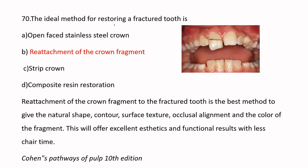The ideal method for restoring a fractured tooth is reattachment of the crown fragment. Stainless steel crowns in the anterior region are a poor option due to aesthetics concerns. Crown fragment reattachment is one of the best options among strip crowns and composite restorations because it provides natural shape, surface texture, occlusal alignment, and color, offering excellent aesthetic and functional results.